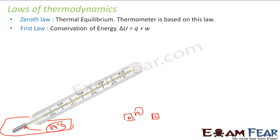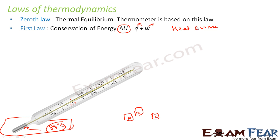The first law talks about the conservation of energy. It says that the change in internal energy is nothing but the sum of heat supplied and work done: ΔU = Q + W. So internal energy change equals heat and work done. The energy can neither be created nor destroyed — if you supply some heat or do some work on the system, that will be reflected in the internal energy change.